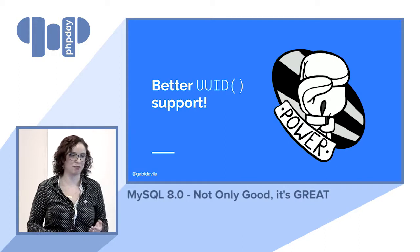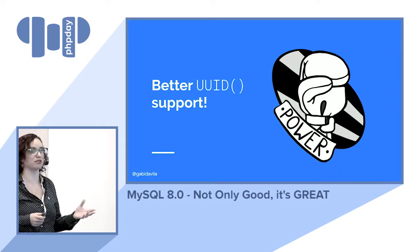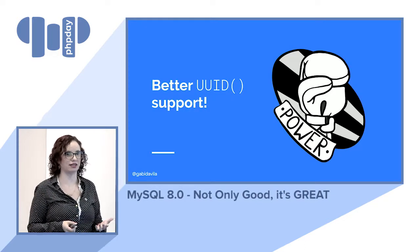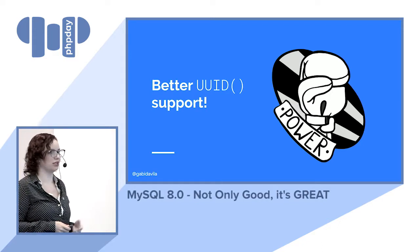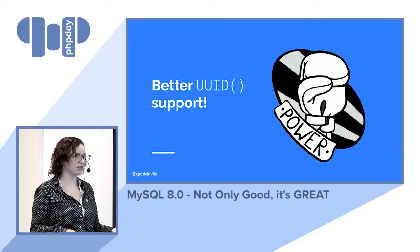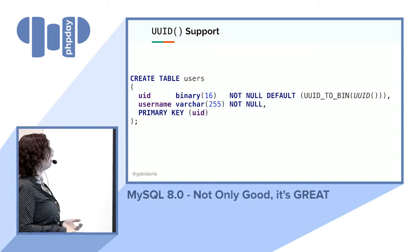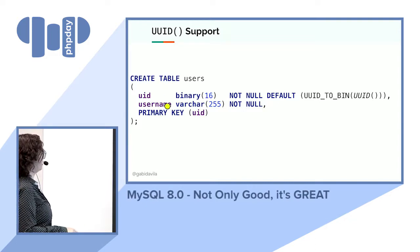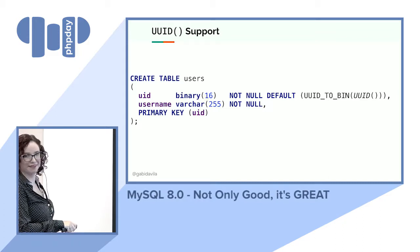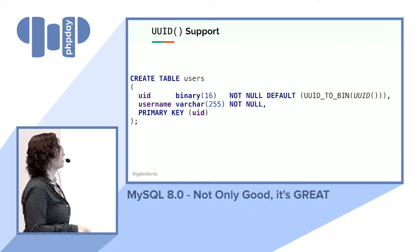This also means better UUID support. I don't recommend using MySQL as a document store with the JSON data type, but if you're using UUIDs, MySQL can now generate them on insert. You can add the UUID function directly into the CREATE TABLE definition, and I recommend saving UUIDs as BINARY rather than as a string for performance reasons.